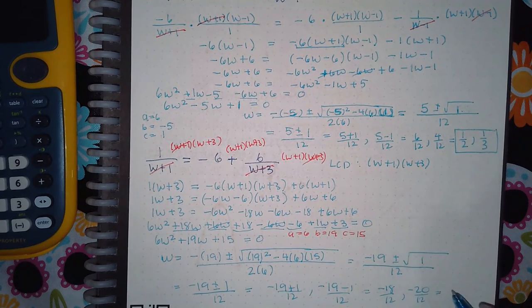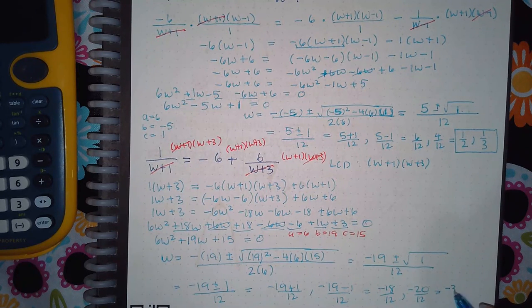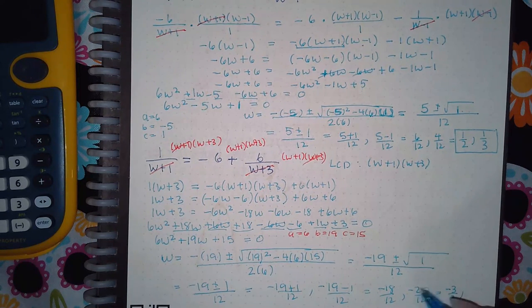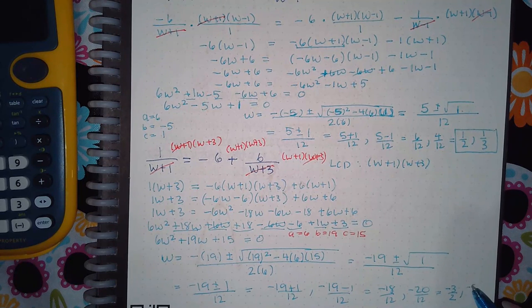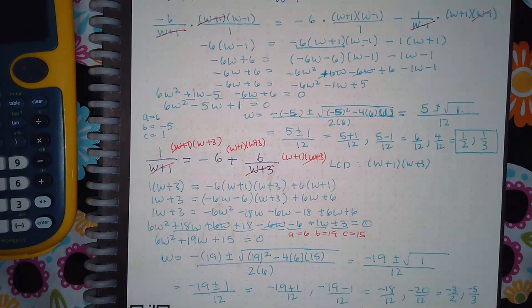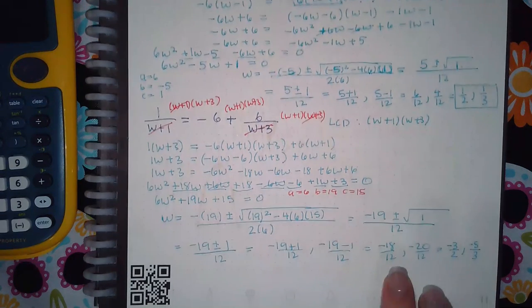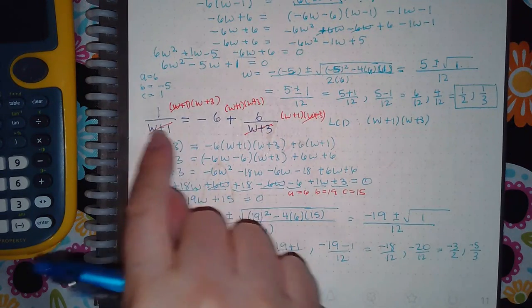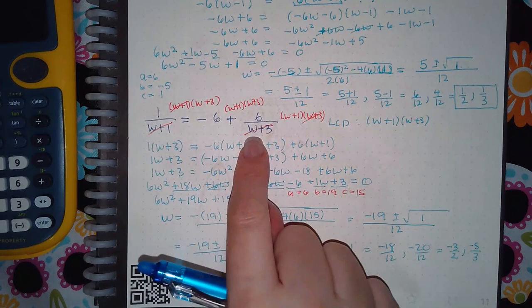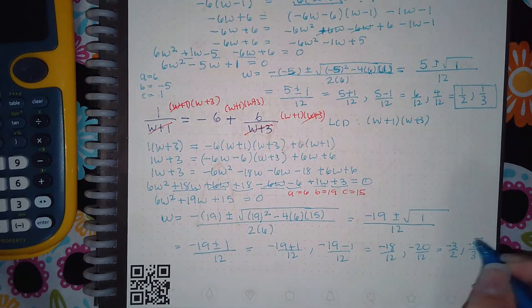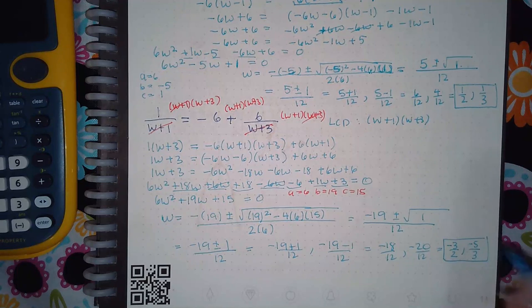So here I get negative 3 over 2. And here I get negative 5 over 3. And so neither one of these denominators—neither one of these numbers is going to make this denominator 0 or this denominator 0. So both of these will be our solutions.